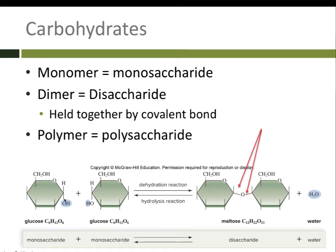If you take two monomers and put them together, you remove a water molecule through a dehydration reaction, hooking those two monomers together with a covalent bond. That would be called a dimer — di means two. So a dimer is a disaccharide: di means two, saccharide means sugar, meaning two sugars.